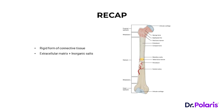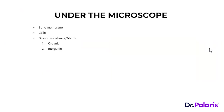Under the microscope, when you cut a section of bone and view it, there are three main things to observe: first, the bone membrane; second, the bone cells; and third, the ground substance or extracellular matrix, which includes both organic and inorganic matrix. We will discuss each of these in detail.